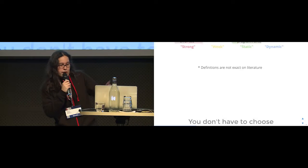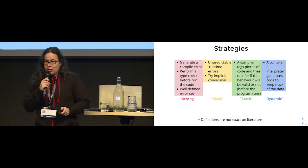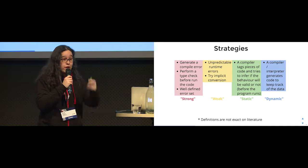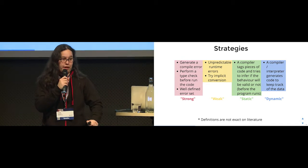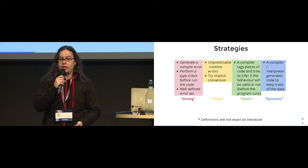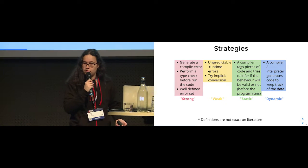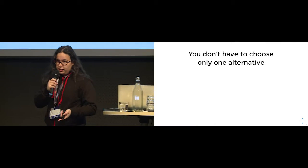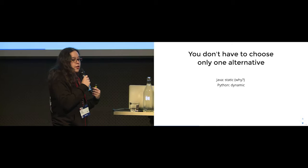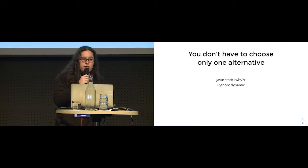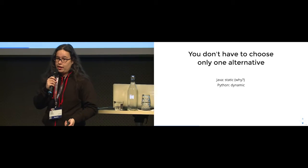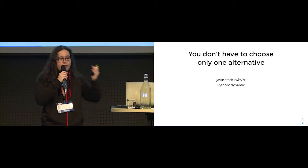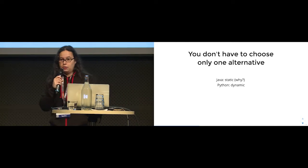You don't have to choose a single alternative. Another valid strategy is: do nothing — and that's what assembly does. Assembly doesn't help you handle any kind of representation errors; it's what we call untyped. You can also choose more than one strategy: Java is static and strong, Python is dynamic, and JavaScript is weak. We can categorize each language based on the strategy it adopts to handle most errors.